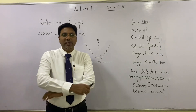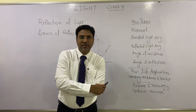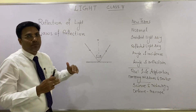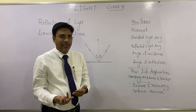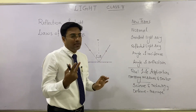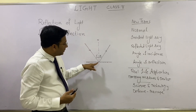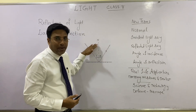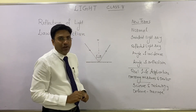Hope you enjoyed the activity and understood the concept. Let us sum up: reflection of light means the bouncing of light when it falls on any object. The two laws of reflection are: first, the incident light ray, reflected light ray, and normal all lie in the same plane; and second, the angle of incidence is equal to the angle of reflection.